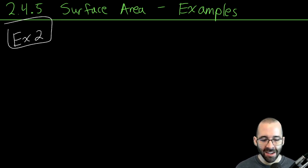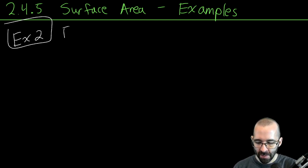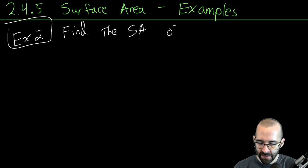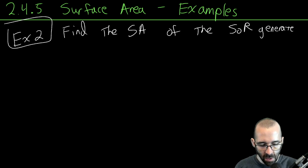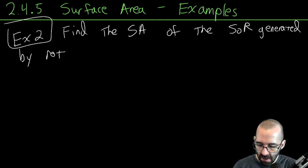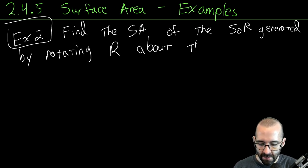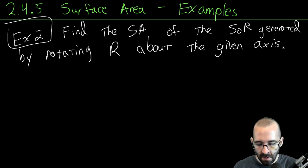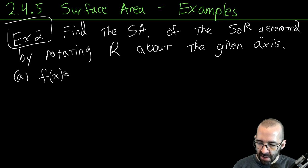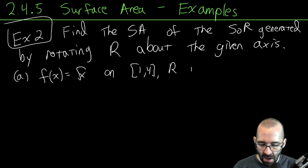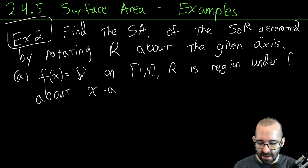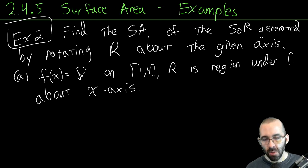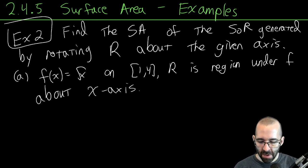We have two examples — one with x, one with y. Find the surface area of the solid of revolution. Whenever we talk about this, we're not talking about the caps at either end, but the outer side of the solid of revolution generated by rotating the region R about the given axis. We'll get a little picture, do the problem, and set it up and evaluate it later.